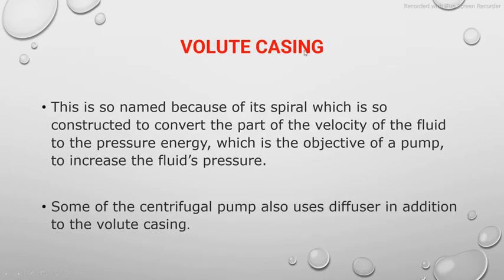The volute casing is named because of its spiral construction. The main purpose of the volute casing is to reduce the velocity of the fluid and to increase the pressure. Its function is to decrease the velocity of the fluid and convert part of the kinetic energy into pressure energy of the fluid.